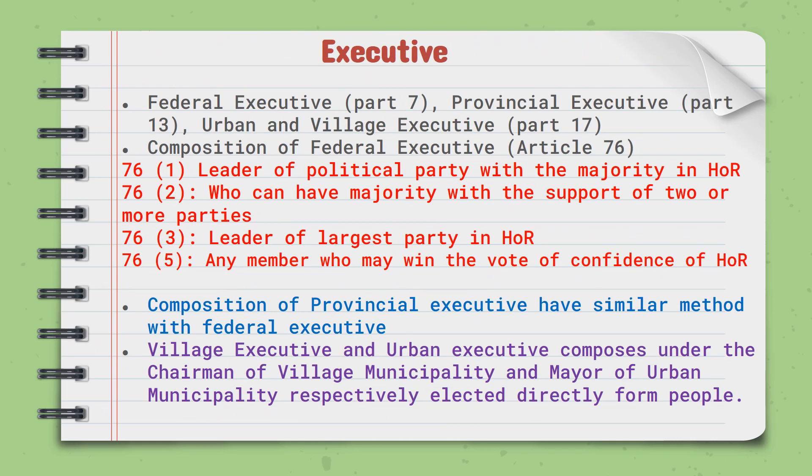Let's talk about the executive branch of government. As we exercise federalism, we have three tiers of government, and therefore the executive is also divided into three tiers. There is federal executive at the centre, headed by the Prime Minister; provincial executive, headed by the Chief Minister; and village and urban executive, headed by the chairman of the village municipality or the mayor of the urban municipality.